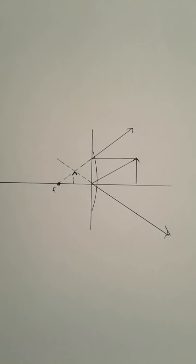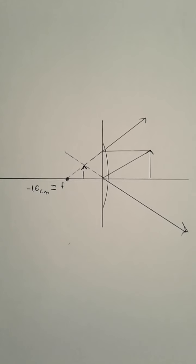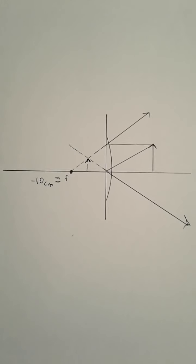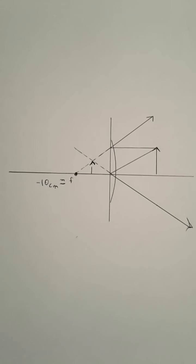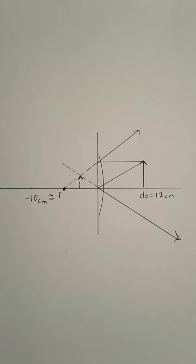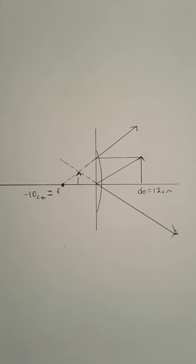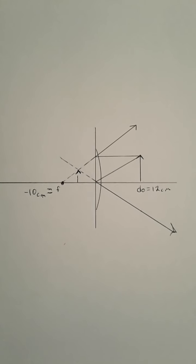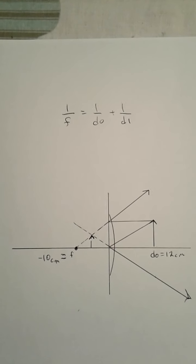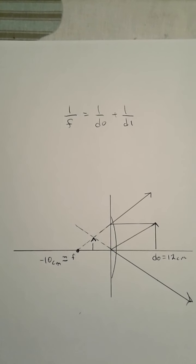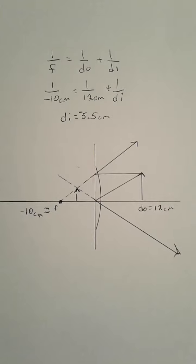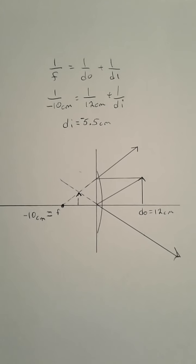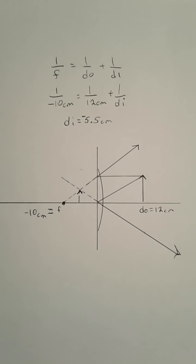Let's do a calculation. I'll make the focus negative 10 centimeters. Remember the negative sign, it's because it's a virtual focus. DO is approximately 12 centimeters on this scale. Now we'll use the formula to calculate DI. DI is found to be negative 5.5 centimeters.